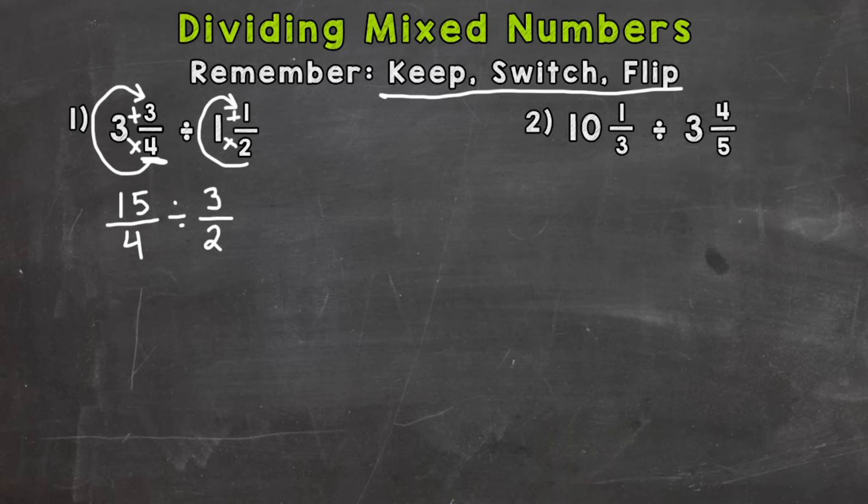Keep, switch, and flip. So the first improper fraction, we keep 15-fourths. We switch the division sign to multiplication. And since we switch division to the opposite to multiplication, we need to flip the second fraction. So the two is going to go up top, and the three is going to be our denominator. So two-thirds.